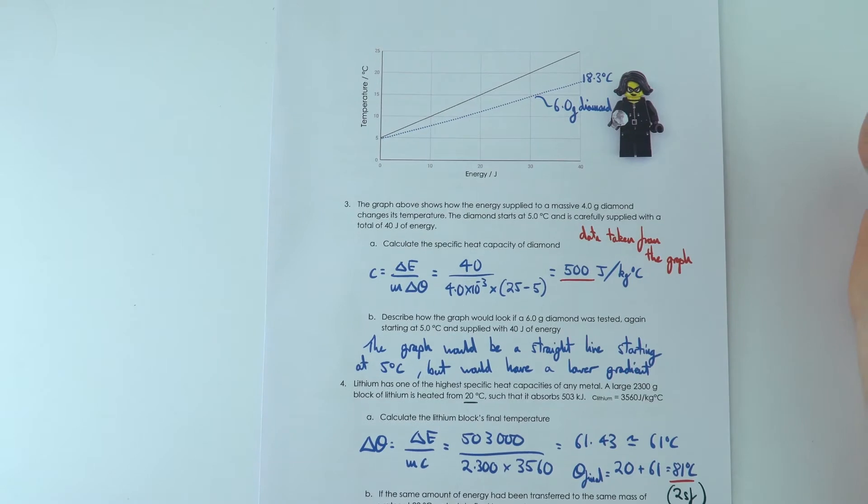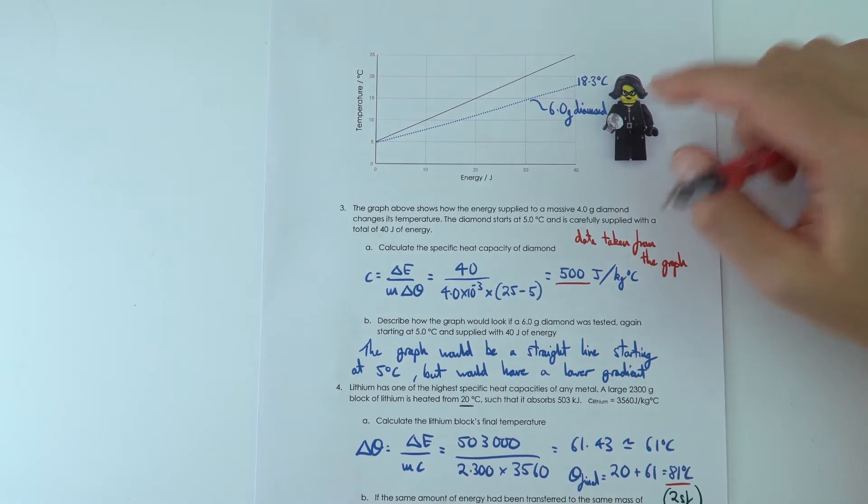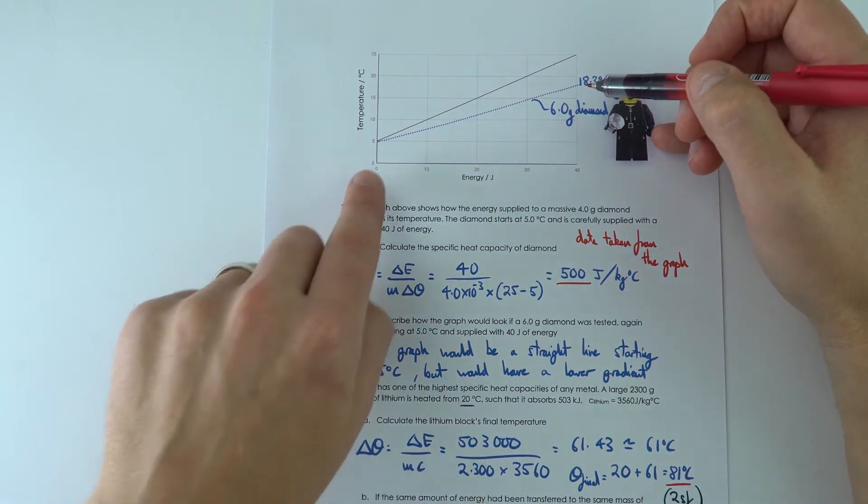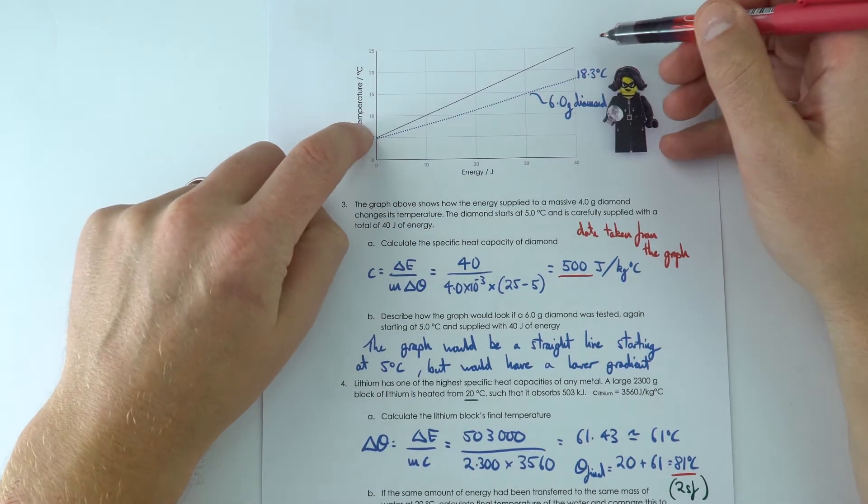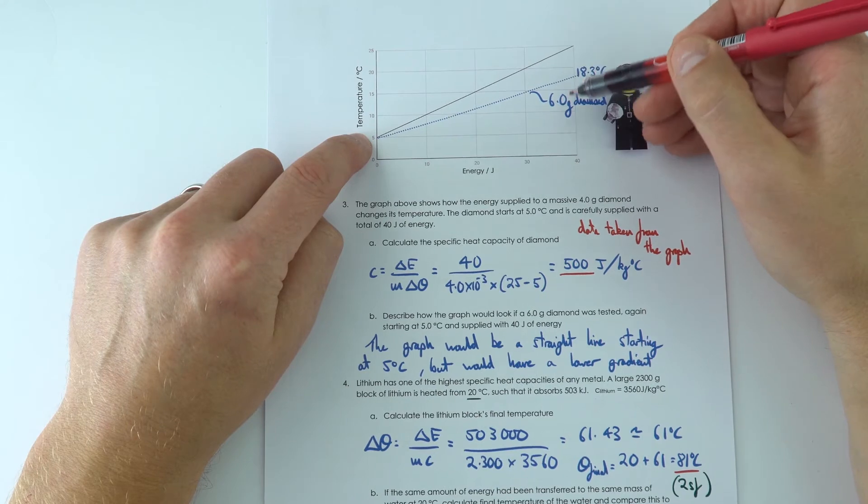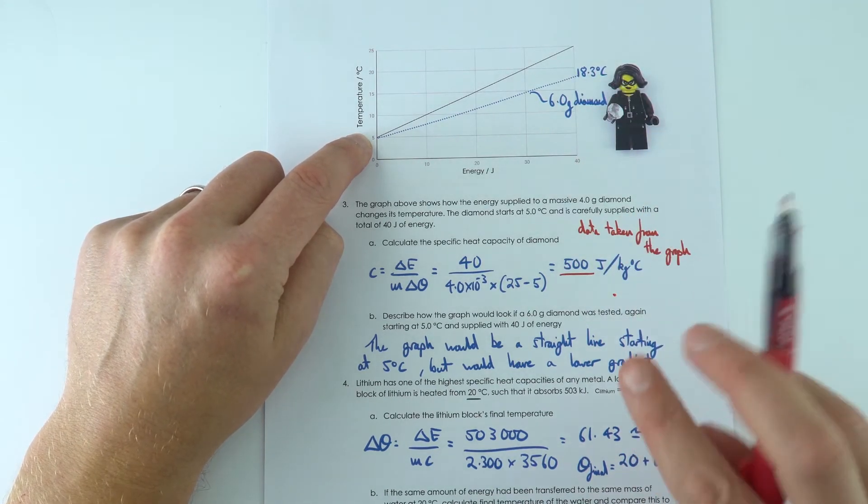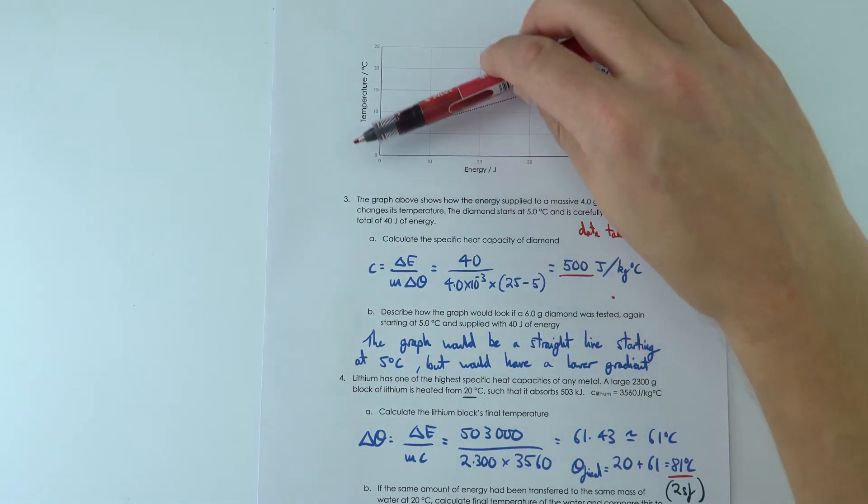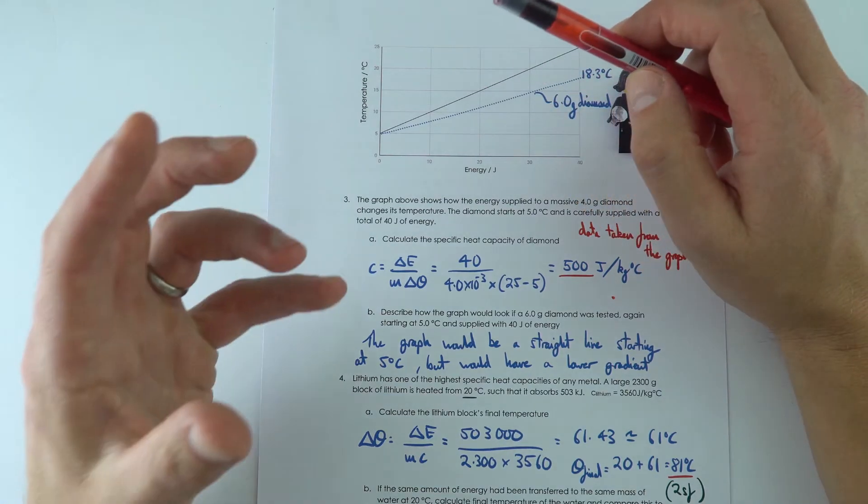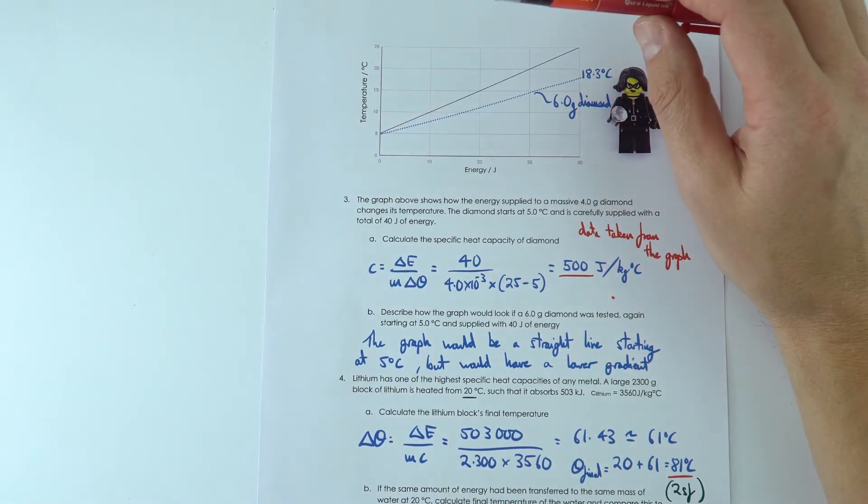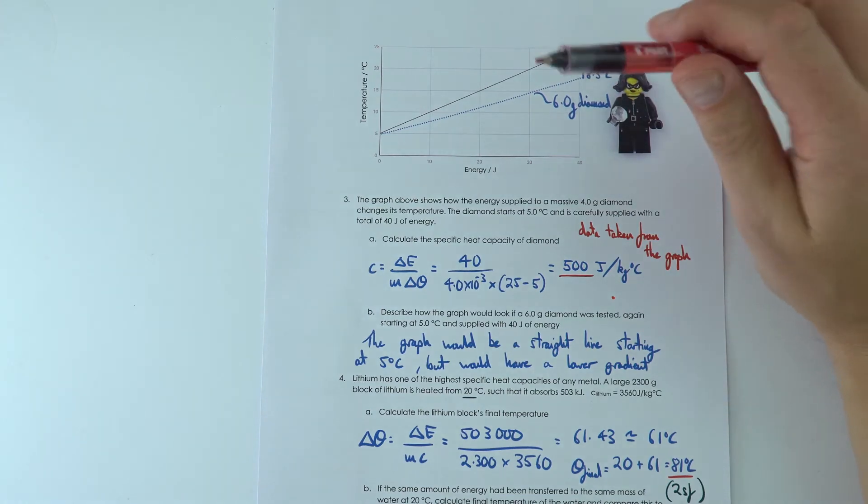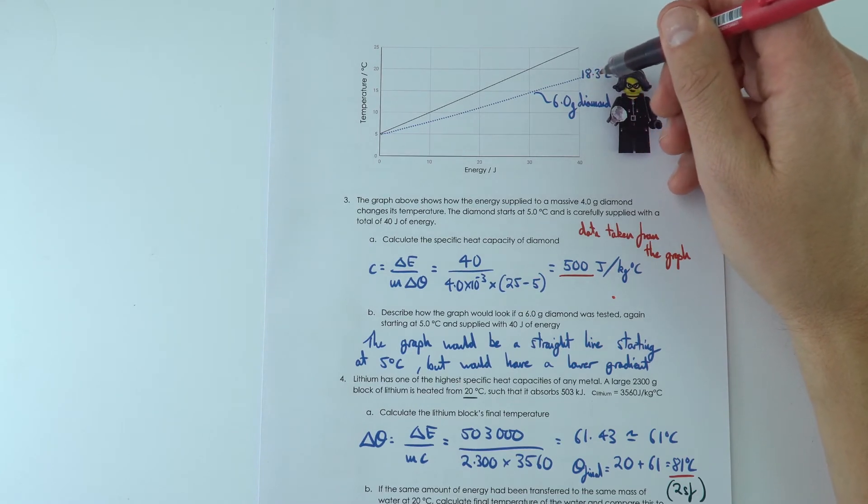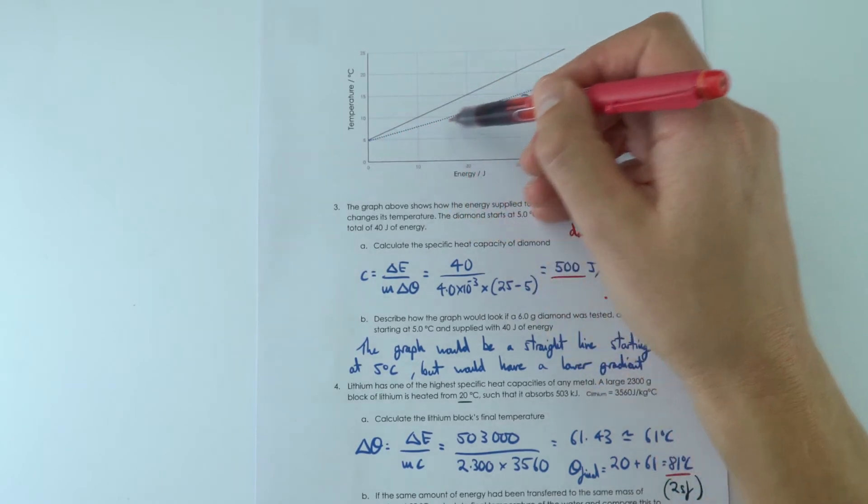Then we go on to a graph. I've got a jewel thief here, one of the Lego minifigures. To work out the specific heat capacity, I've taken some numbers off the graph. I've looked at the biggest change in energy, which is 40, and the final minus the initial temperatures of 25 minus 5, which gives a value of 500 joules per kilogram per degree Celsius. But if you had 6 grams rather than 4 grams, we've now got one and a half times as much mass, so we'd have a reduction in the final temperature because that same amount of energy is heating up more stuff. If you did the calculation, you'd find it ends up at 18.3 degrees Celsius. So we'd still have a straight line, just with a lower gradient.